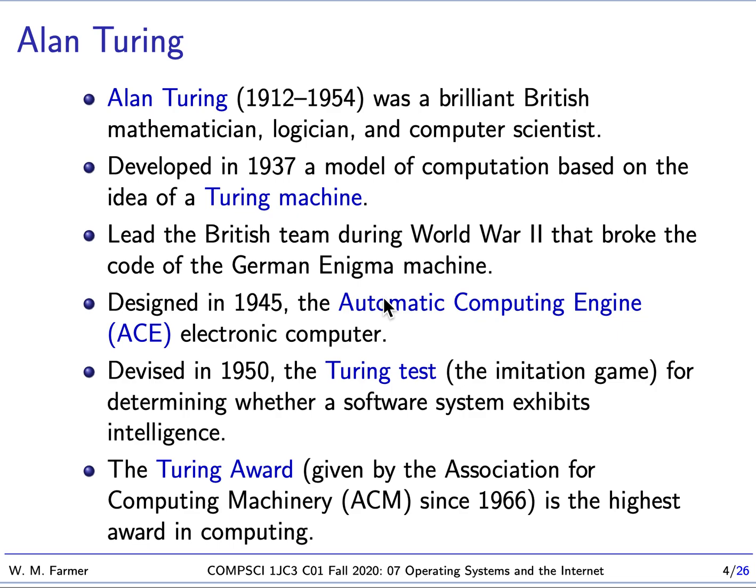Finally, there was never established a Nobel Prize for computing. But today there is a prize for computing called the Turing Award. This is considered equivalent to winning a Nobel Prize, and of course it is named after Alan Turing.